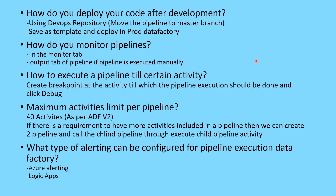Regarding the maximum number of activities per pipeline: as per the latest release, you can only have up to 40 activities inside a pipeline. If you have a requirement for more than 40 activities to be executed in one go, you can split the activities into two pipelines, define one as a child pipeline, and call it from the main pipeline using the Execute Pipeline activity.